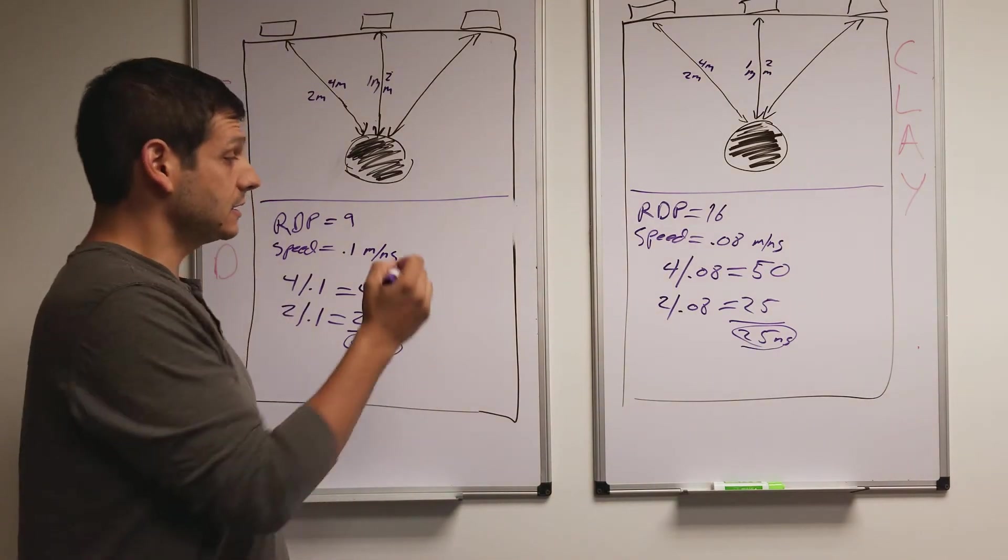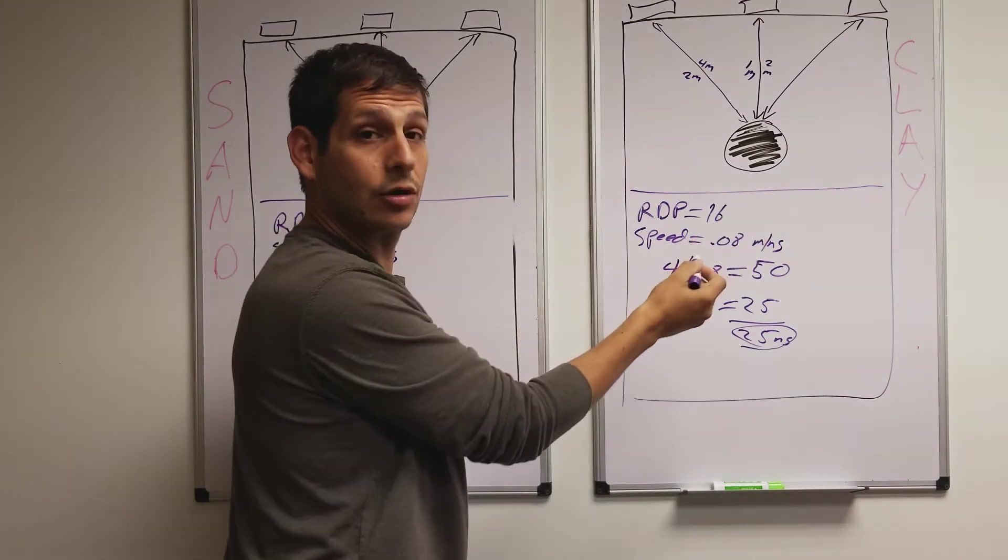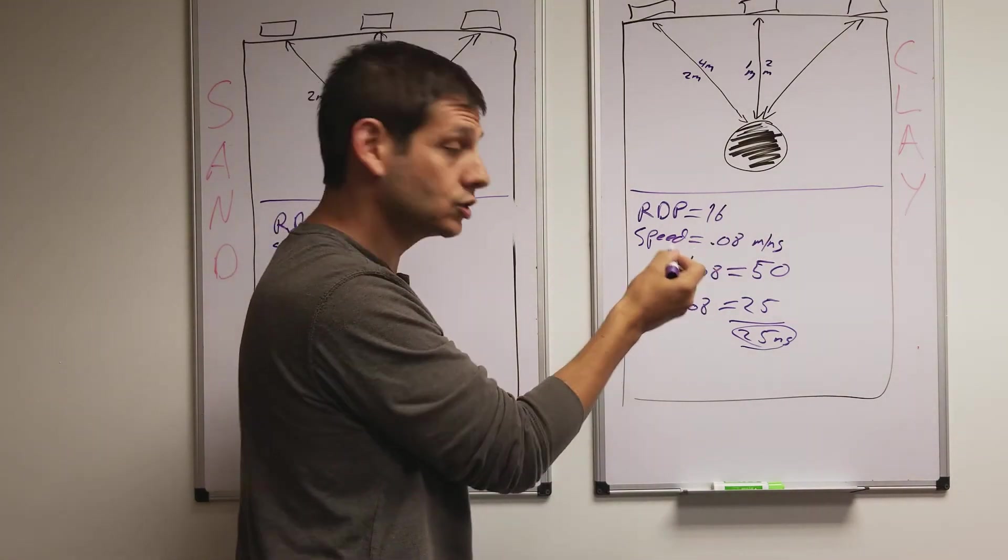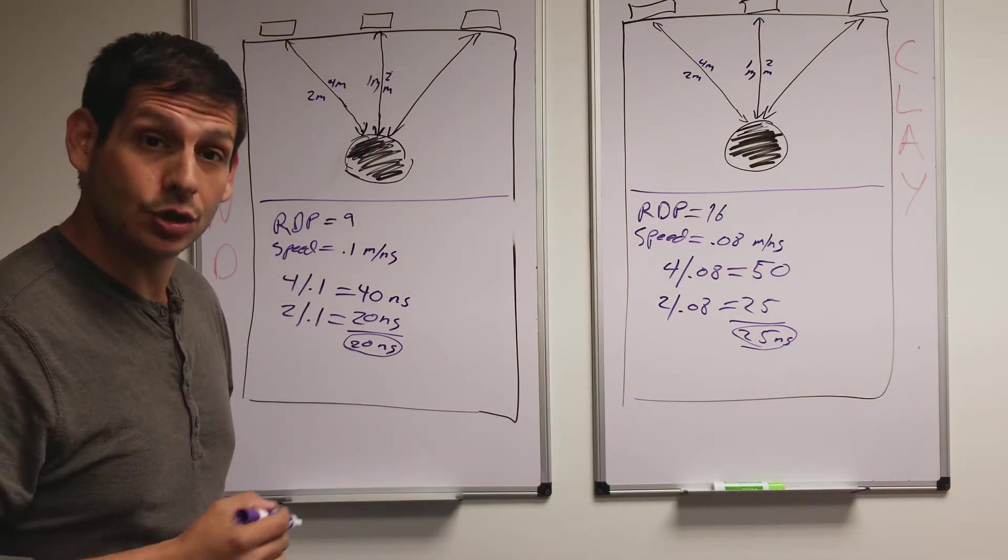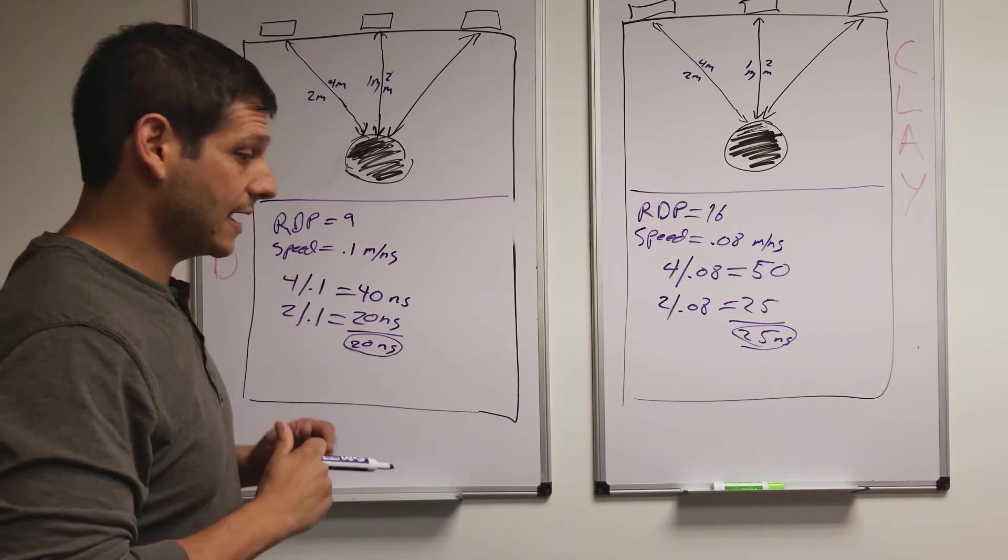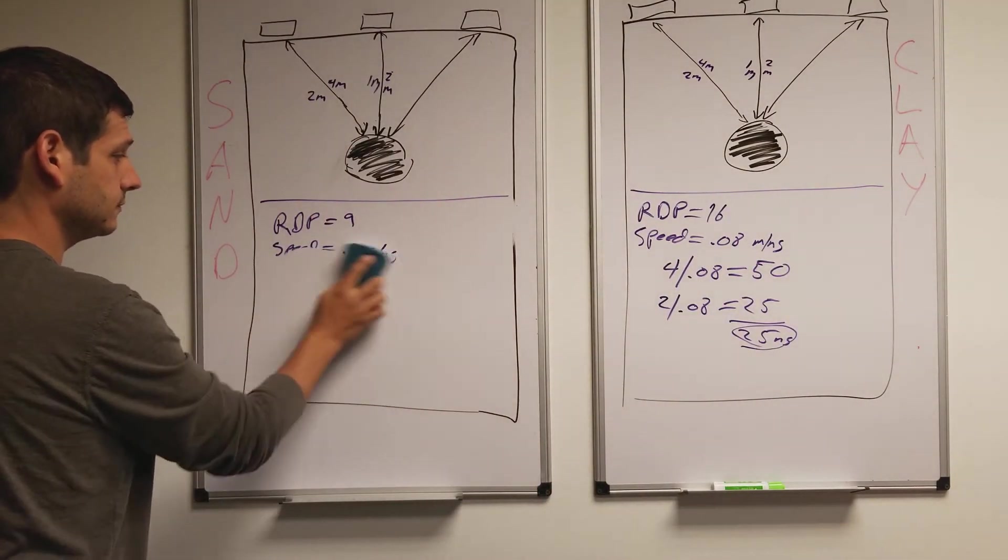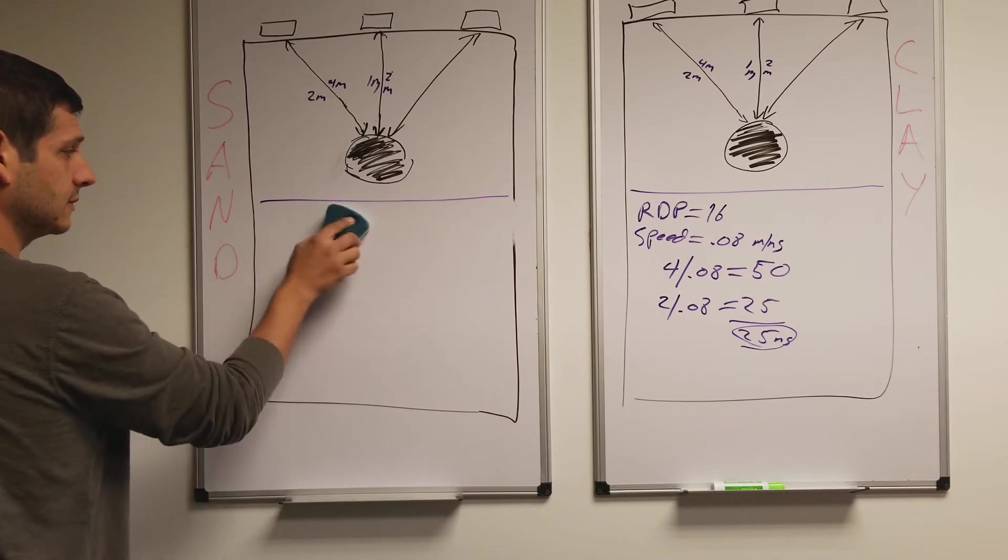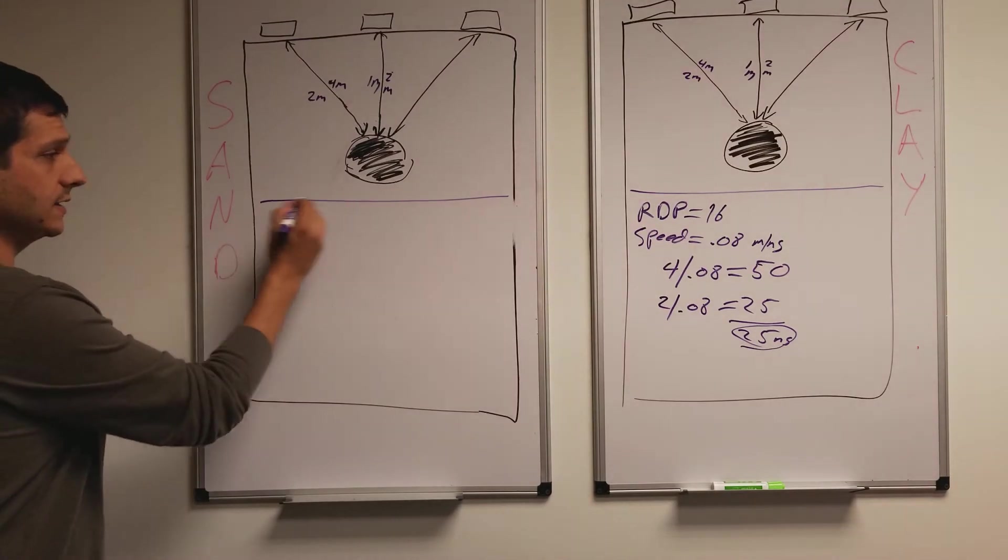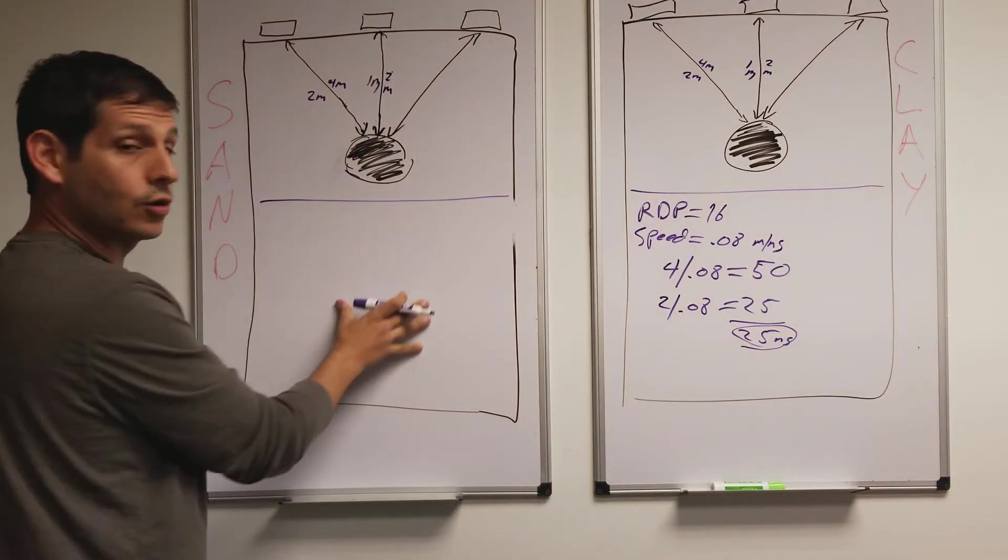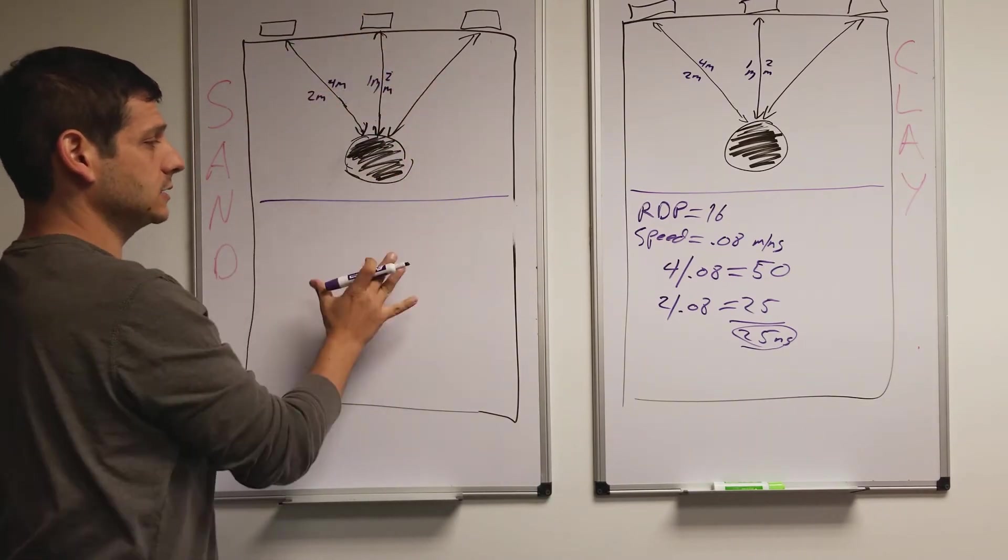It's a greater difference. 20 nanoseconds difference in two-way travel time, 25 nanoseconds difference. What does that mean? That means this is going to create a broader hyperbola and this will create a more narrow hyperbola. So, let's show you, let me just go ahead and show you what I mean by that. Go ahead and erase all this.